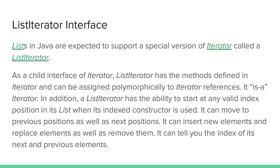ListIterator is a descendant of iterator, so it has all of the methods defined for a standard iterator. A ListIterator instance can be assigned polymorphically to a basic iterator reference and used as a basic iterator, because a ListIterator is an iterator.